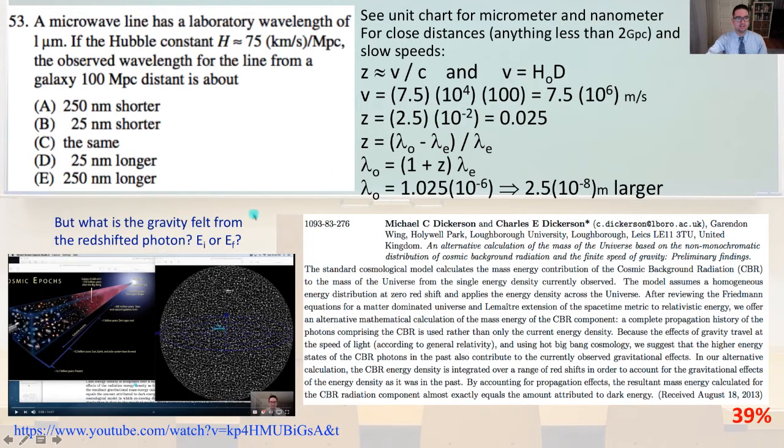Number 53, a microwave line has a laboratory wavelength of 1 micrometer. If the Hubble constant H equals about 75 kilometers per second per megaparsec, the observed wavelength for the line from a galaxy 100 megaparsecs distance is about, and we are going to refer back to our unit chart for the micrometer and nanometer conversions. So for close distances,